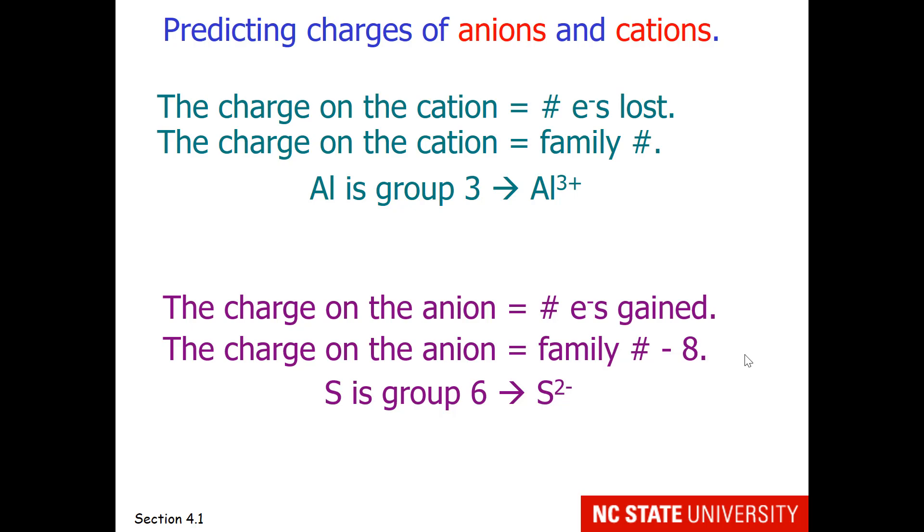The charge on the anion will be the number of electrons gained. So it is the family number minus 8. An example is sulfur in group 6. The most common ion of sulfur is sulfur 2-.